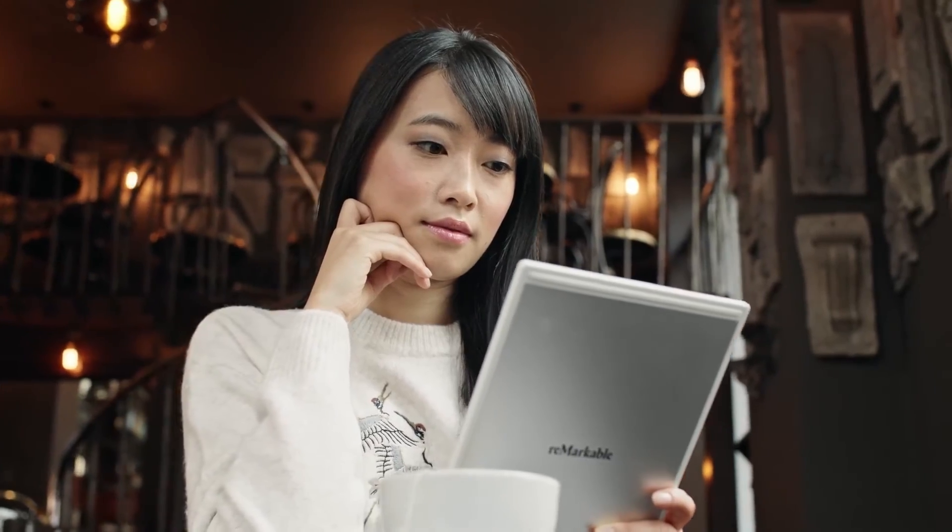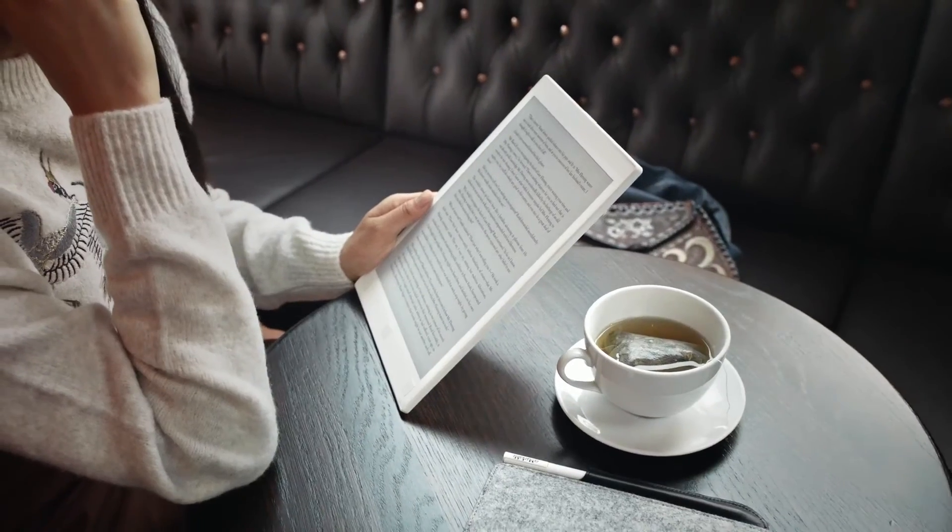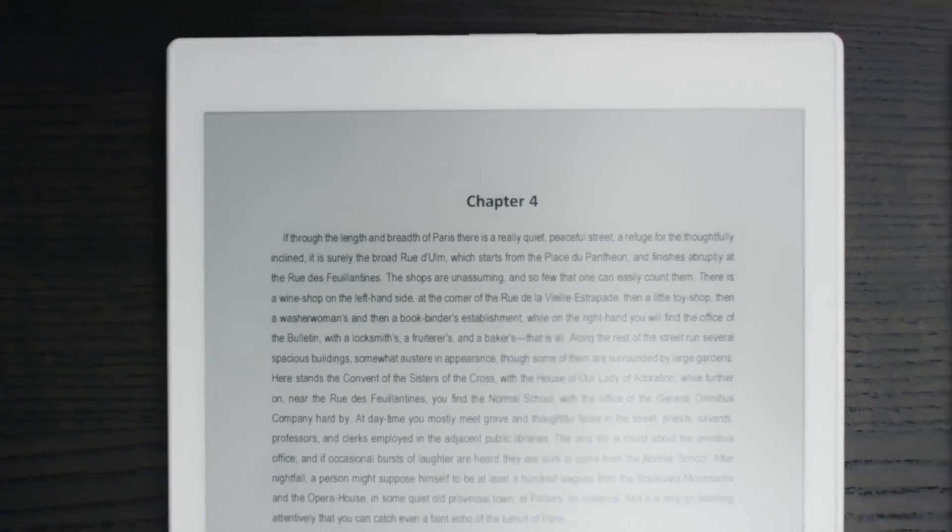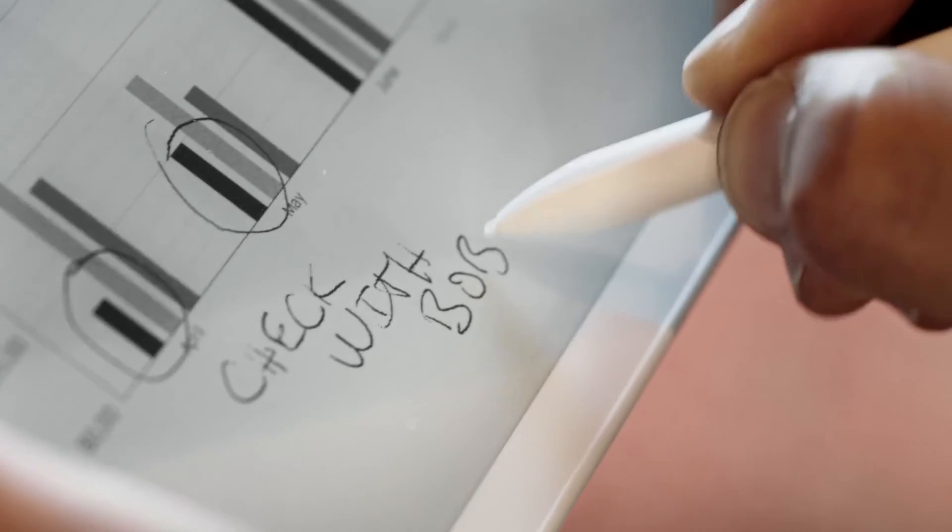Reading on Remarkable is a distraction-free, paper-like experience with no glare or backlight. Whether it's a book, textbook, or work document, capture your thoughts instantly by writing directly on the page.